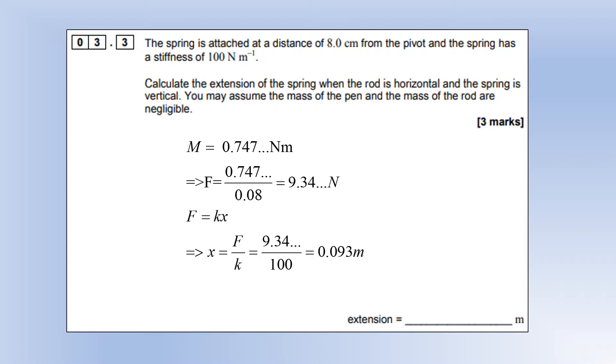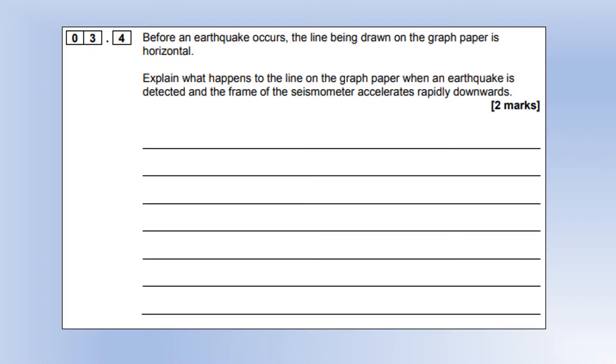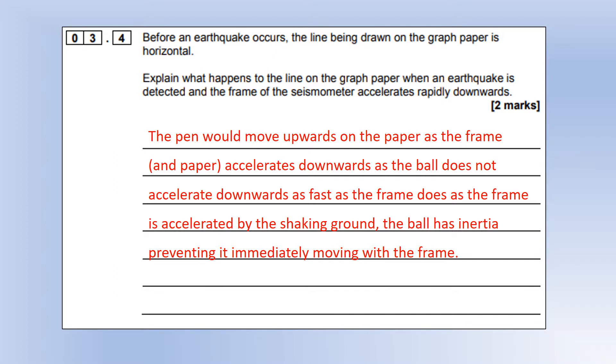Before an earthquake occurs, the line drawn on the graph is horizontal. Explain what happens when an earthquake is detected and the frame accelerates rapidly downwards. The pen would move upwards on the paper as the frame accelerates downwards, because the ball is not directly attached to the frame. The ball has inertia preventing it from immediately moving with the frame, so the ball moves up relative to it.